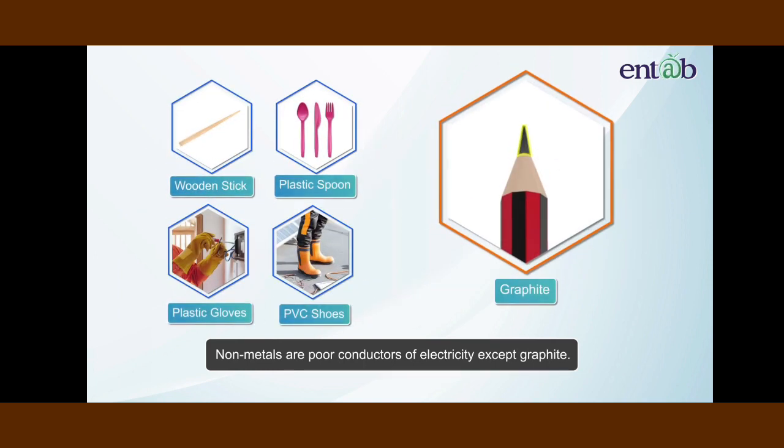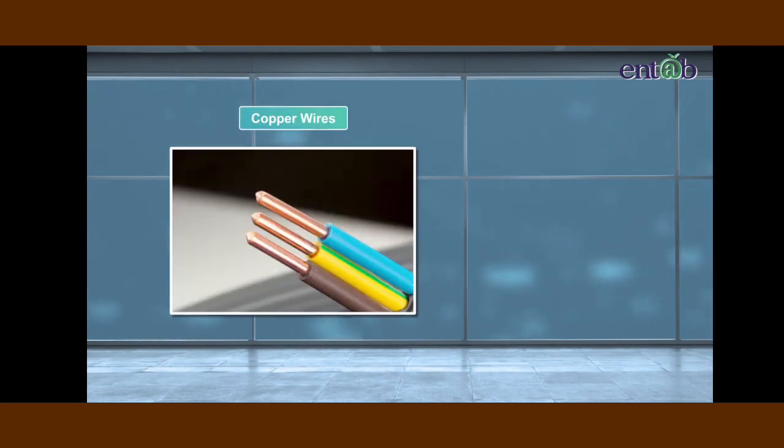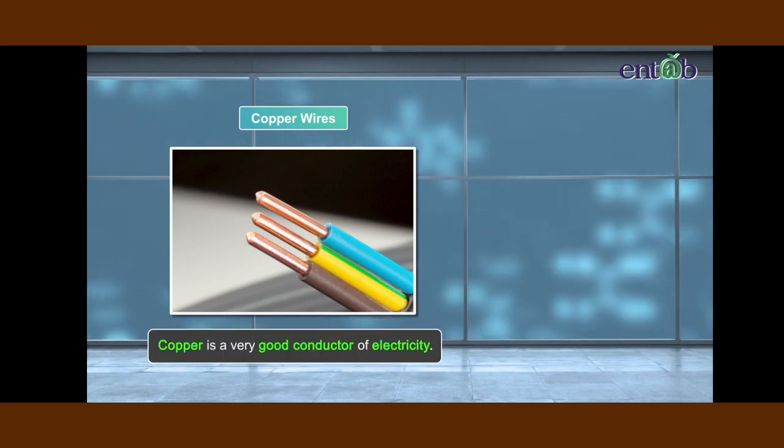We conclude that metals are good conductors of electricity. We also understand that non-metals are poor conductors of electricity except for graphite, which despite being a non-metal is a good conductor. In this activity we have used copper wires as connecting wires, as copper is one of the best conductors of electricity.